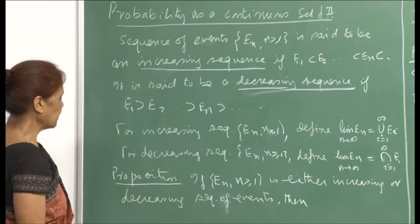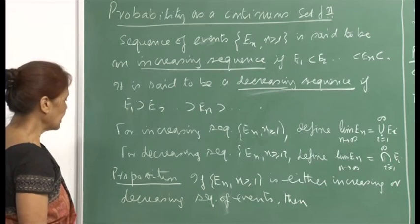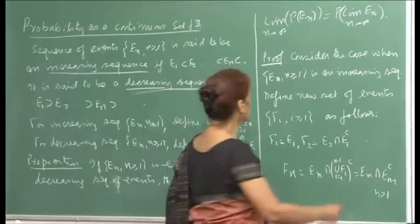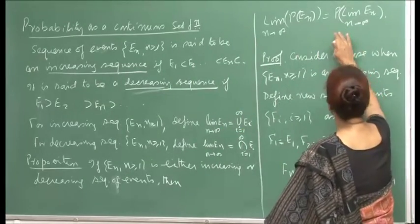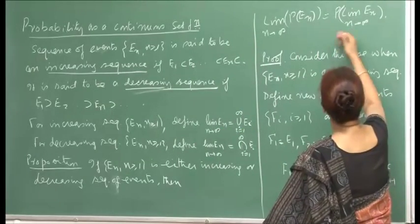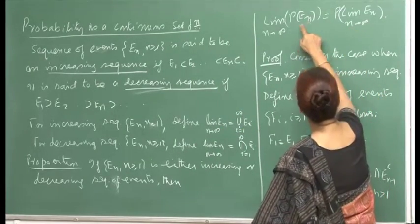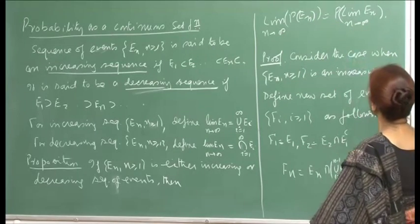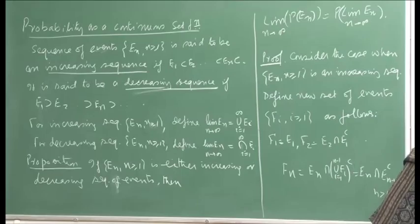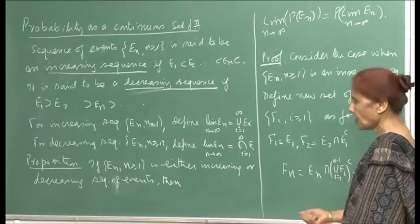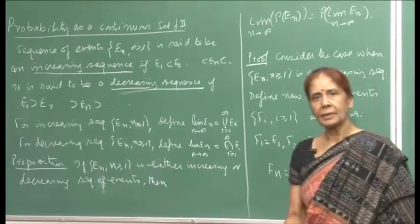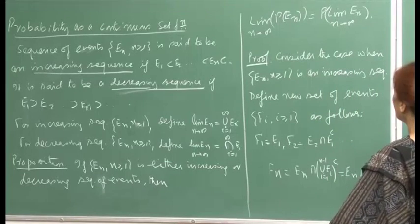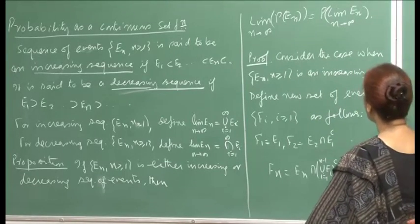The proposition is: if {Eₙ} is either an increasing or decreasing sequence of events, then lim P(Eₙ) as n → ∞ equals P(lim Eₙ) as n → ∞. What we are saying is that you can interchange the operation of taking the limit and taking the probability, because of the continuity of P on sets.